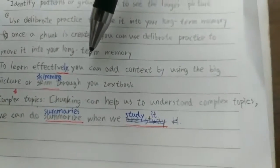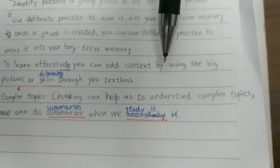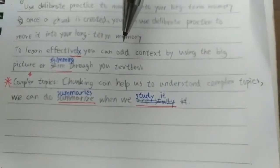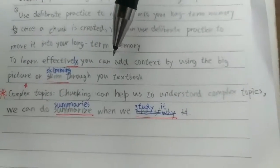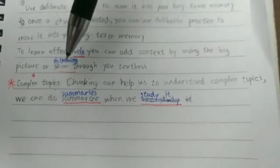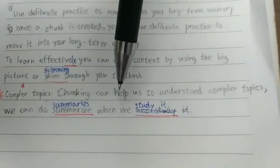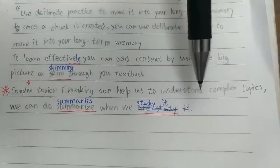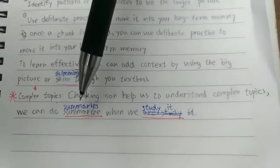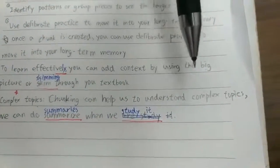To learn effectively, you can add context by using the big picture or skimming through your textbook. Chunking can help us to understand complex topics. We can summarize when we study it. Thank you.